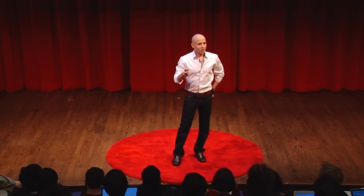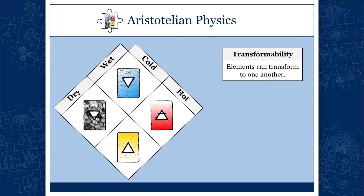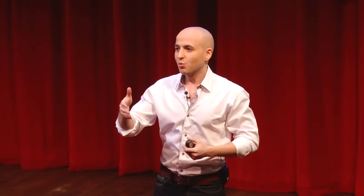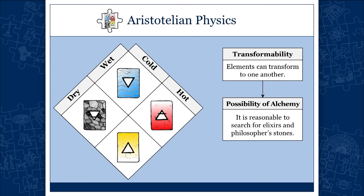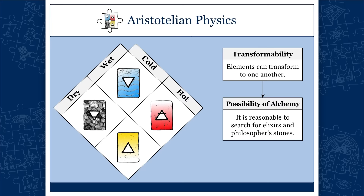If you accept the idea of transformability, does it make sense to study those transformations? If the world allows for transformations, can you have a science about that? Yes. What would that science be called? Student Michaela: alchemy. Exactly — the very possibility of alchemy follows from the Aristotelian principle of transformability. It doesn't tell you that you have to accept alchemy as a working theory, but the possibility of alchemy was never questioned. The idea that alchemy is a scientific discipline was beyond question.